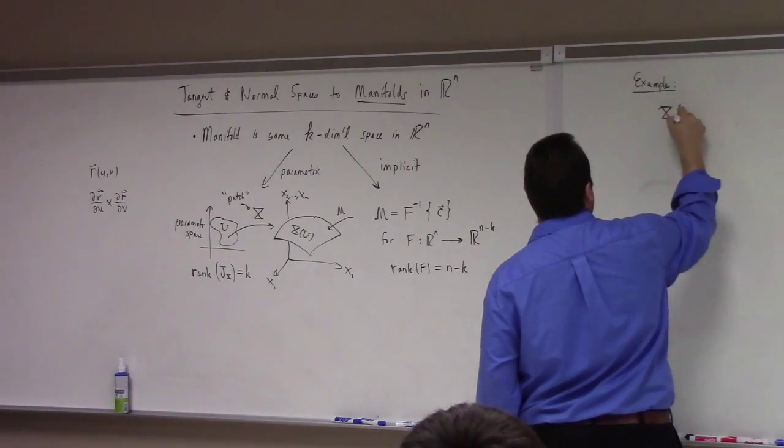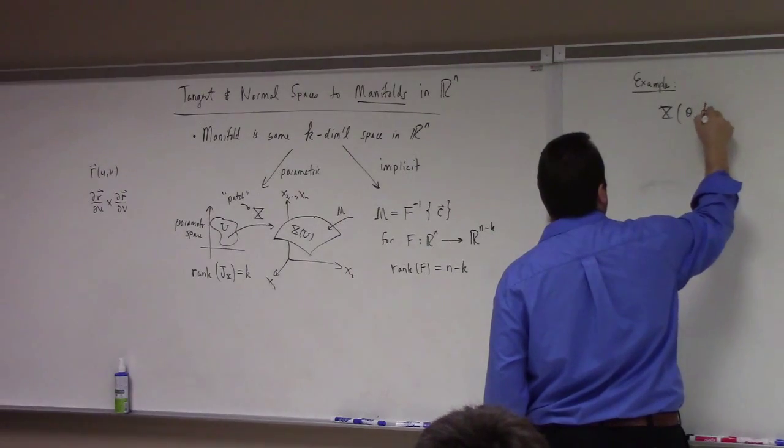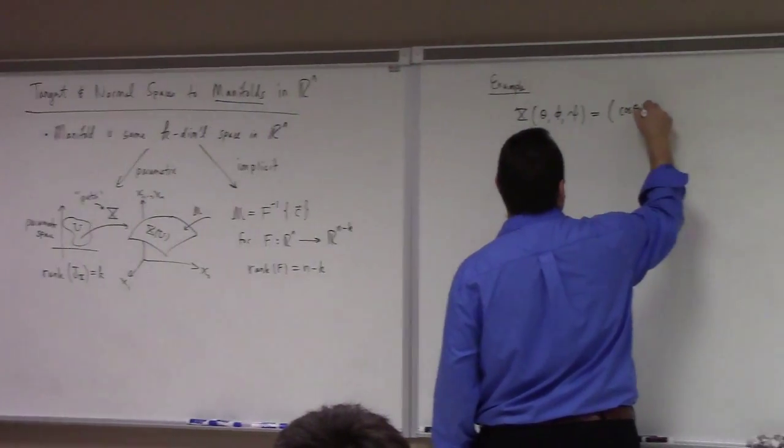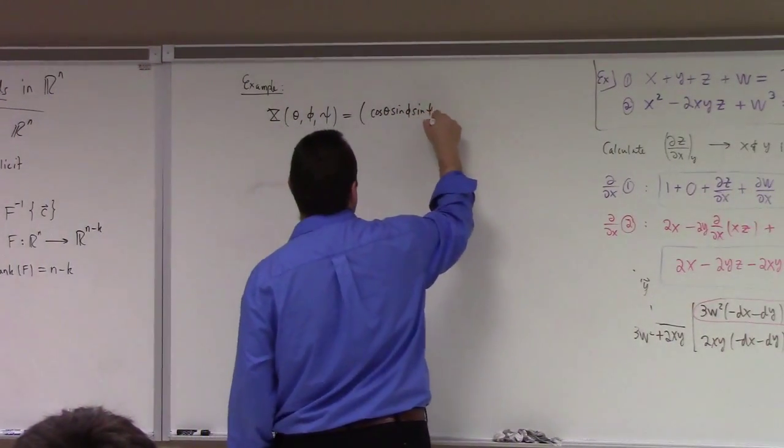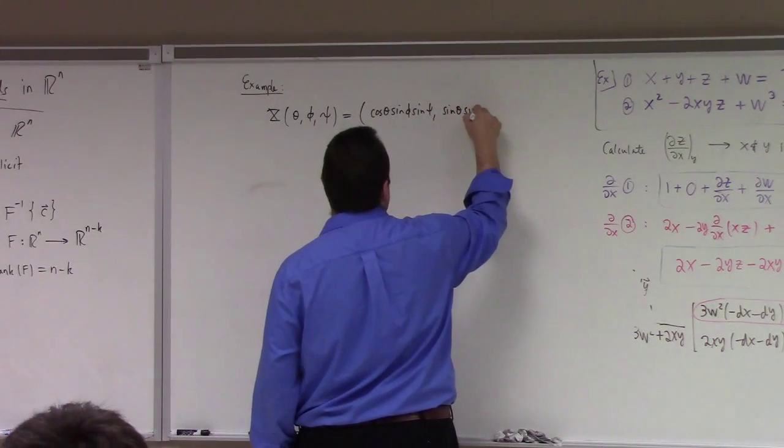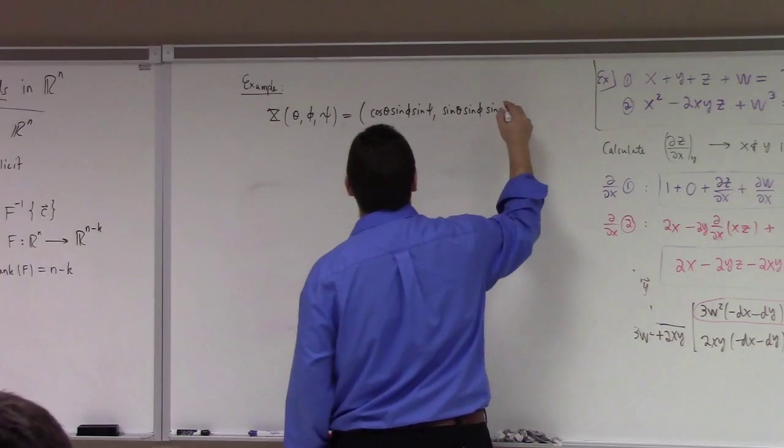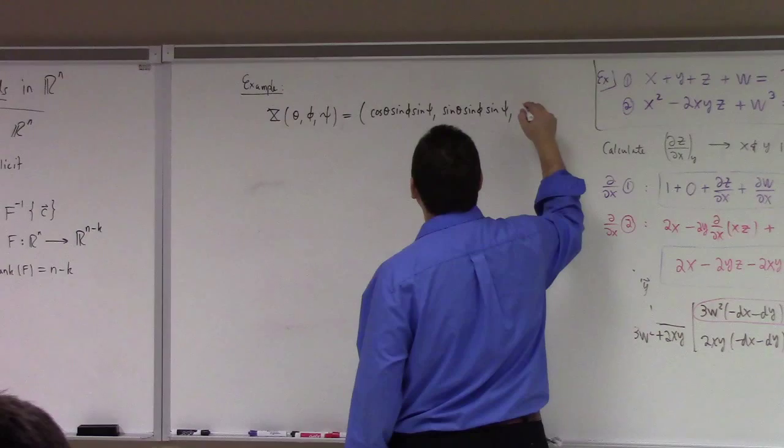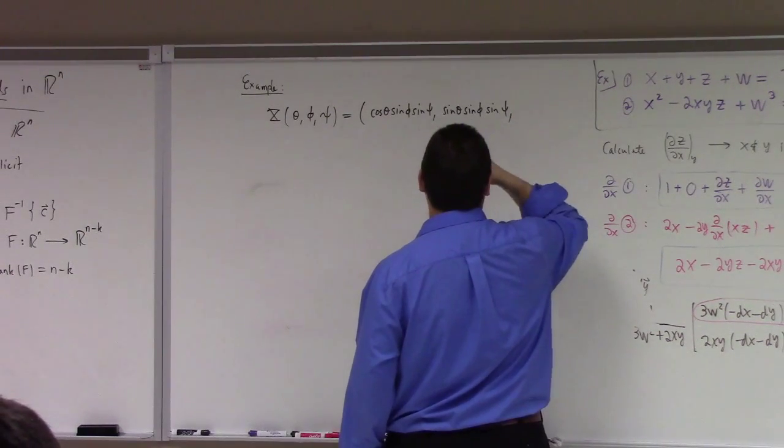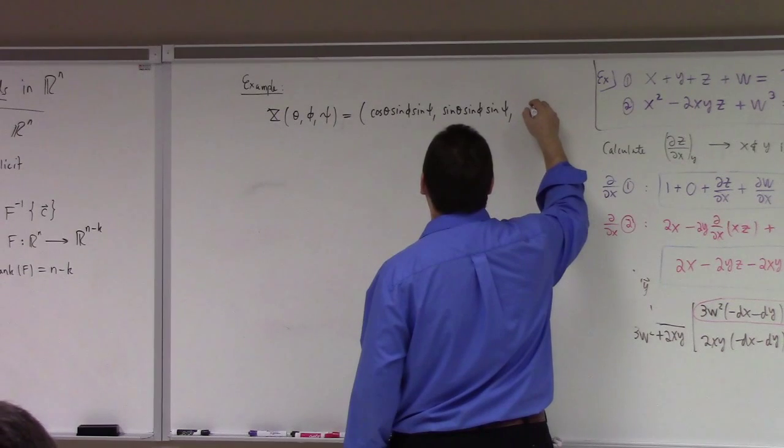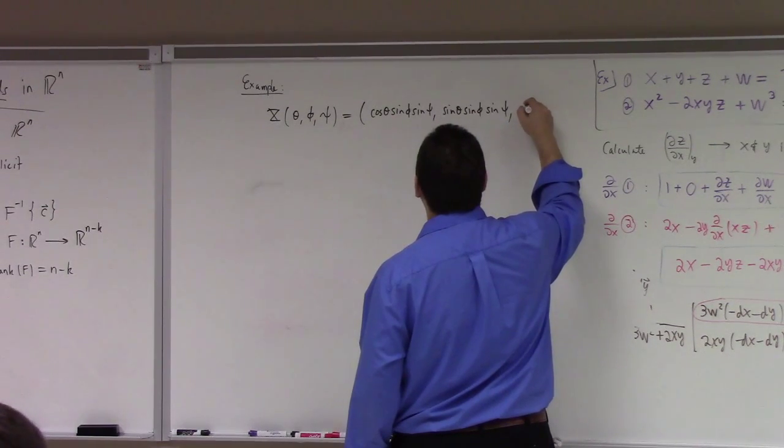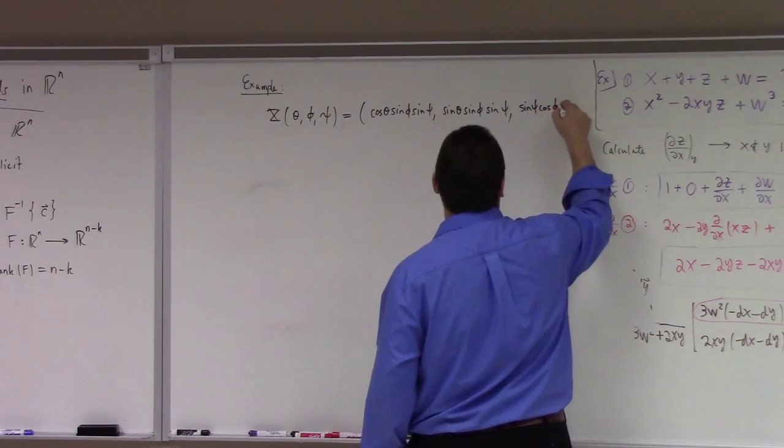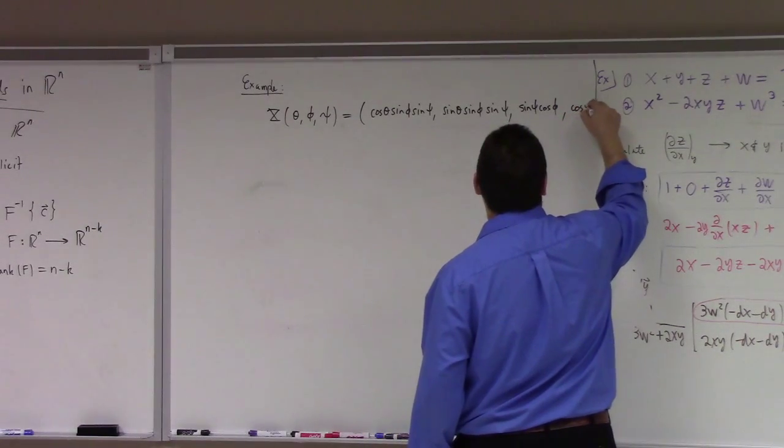So here's one. How about this? X of theta, phi, and psi. So let's see here. Cosine theta, sine phi, sine psi, sine theta, sine phi, sine psi. Those are not squiggles. They're not squiggles. These are legit. Let's see here. That made me forget my, okay, sine phi, cosine phi, and then finally cosine pitchfork.